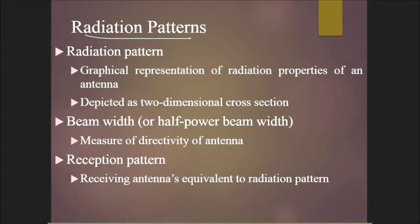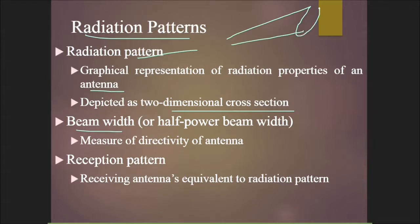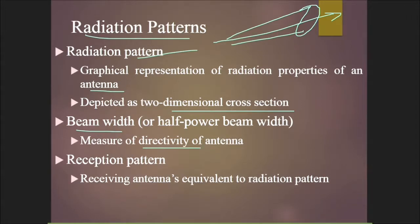Radiation patterns are the graphical representation of the radiation properties of an antenna, depicted in two-dimensional cross-section. We have beam width, also called half-power beam width, which is a measure of the directivity of an antenna. The propagation takes place within a solid angle. Isotropic means sending electromagnetic radiation equally in each and every direction.